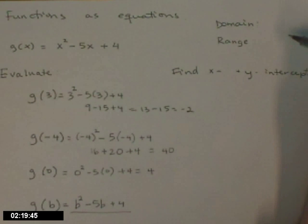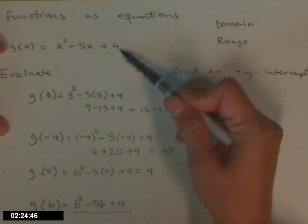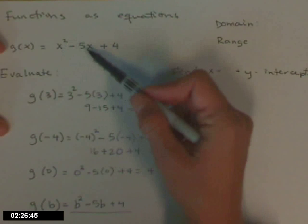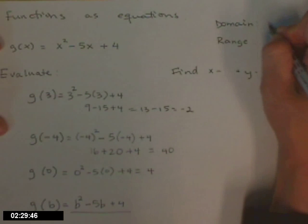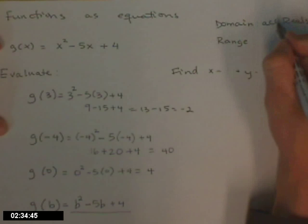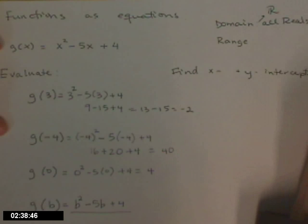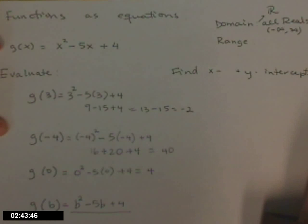Something else that you'll be asked to do is domain and range. So for the domain — this is a polynomial, and all of my x's are raised to nice integer powers. The domain for polynomials is all real numbers. You can also use the symbol, a capital R with two lines, or interval notation: parentheses negative infinity to positive infinity.